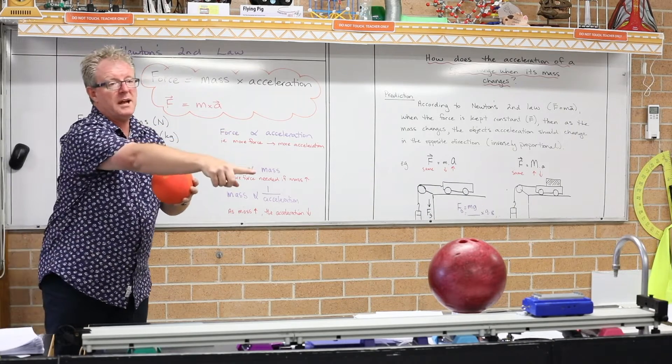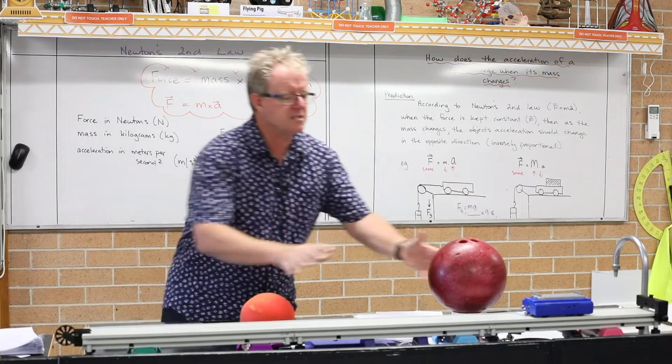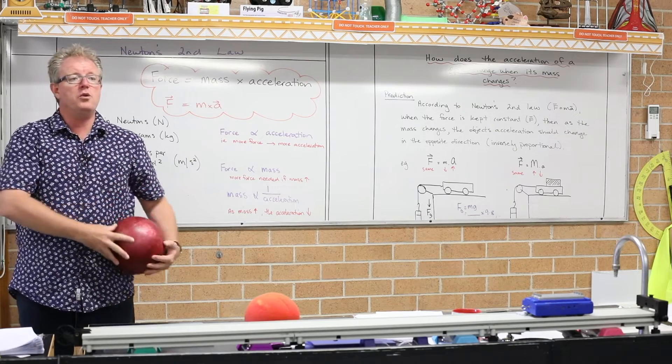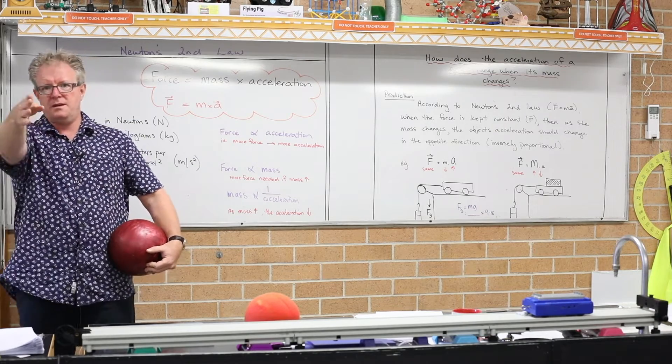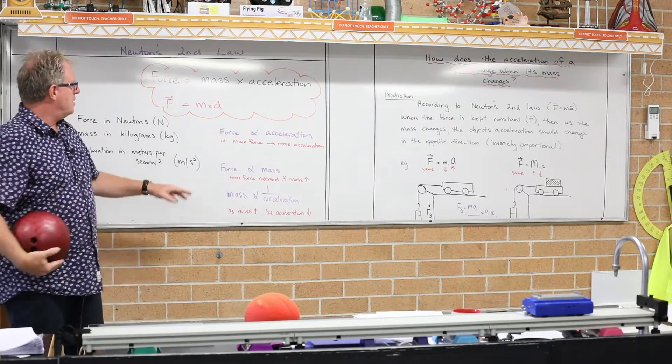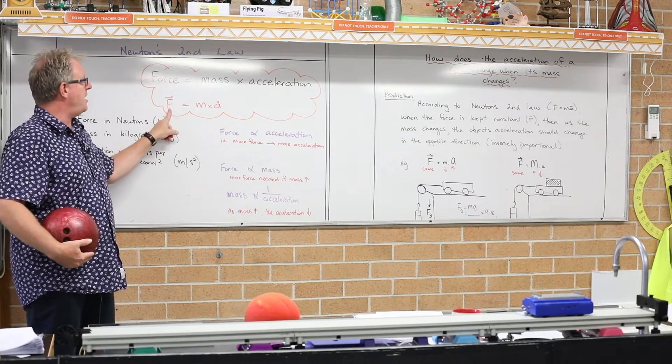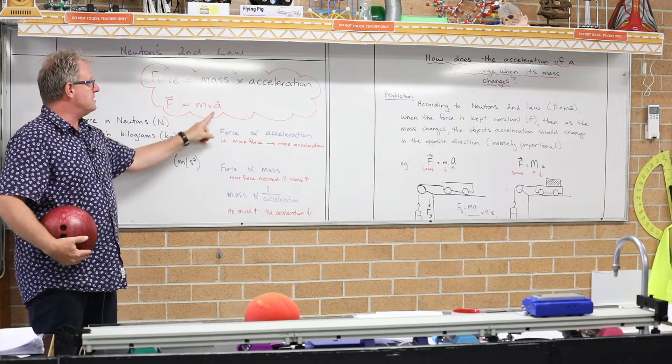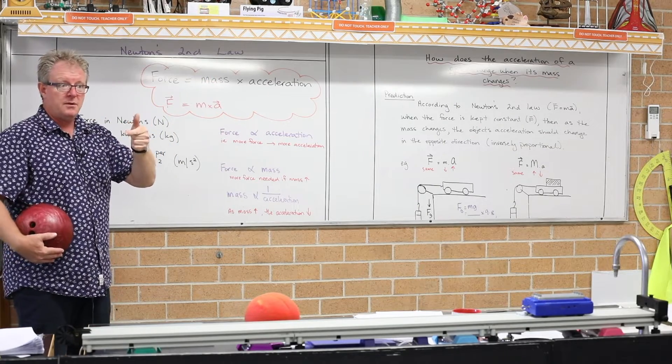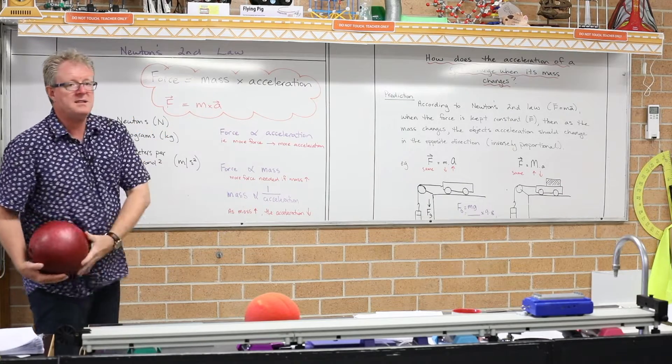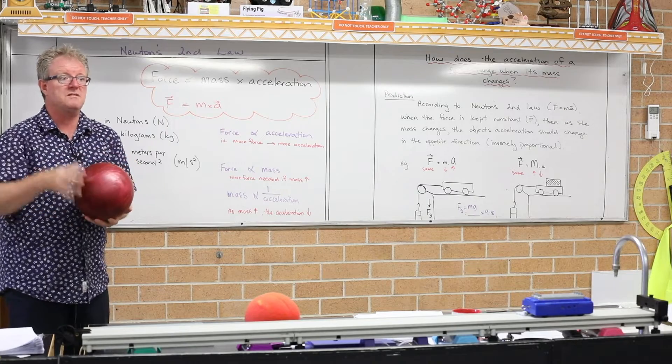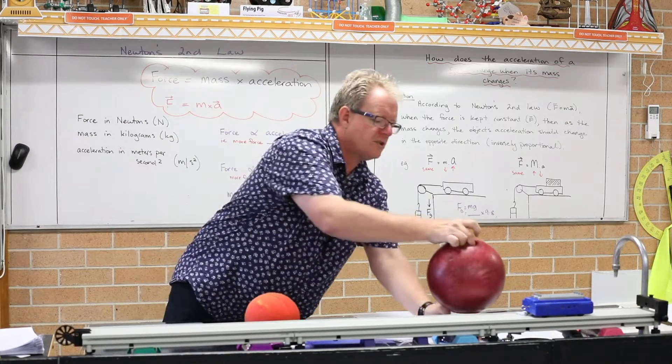If I was to get the heavier ball now, if I was to change its mass and I was to pull this in the elastic band the same distance, which one of the two balls would have the fastest acceleration? The one with the less mass. So when I keep the force the same, as the mass decreases, the acceleration increases. It's an opposite relationship. If I increase the mass and I keep the force the same, then this will only be projected a small distance. It'll have a small acceleration.